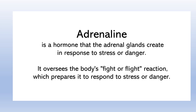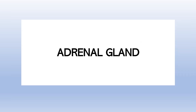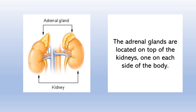Adrenaline is a hormone that the adrenal glands create in response to stress or danger. It oversees the body's fight or flight reaction, which prepares it to respond to stress or danger. The adrenal glands are located on top of the kidneys, one on each side of the body.